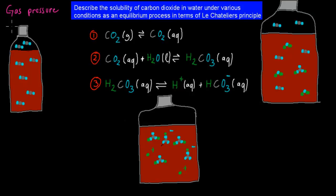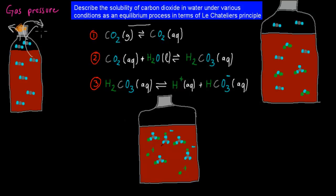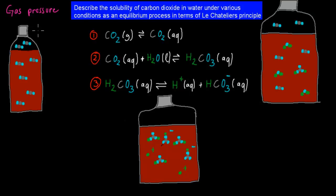First, let's look at gas pressure. If we were to open this bottle, the carbon dioxide molecules could leave, resulting in fewer CO₂ gas molecules, causing a shift from right to left — a reverse reaction, which we call degassing. We want a closed cap, because there will only be equilibrium in a closed system; otherwise there's no equilibrium.